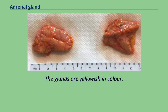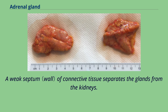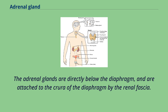The glands are yellowish in color. The adrenal glands are surrounded by a fatty capsule and lie within the renal fascia, which also surrounds the kidneys. A weak septum of connective tissue separates the glands from the kidneys. The adrenal glands are directly below the diaphragm and are attached to the crura of the diaphragm by the renal fascia.